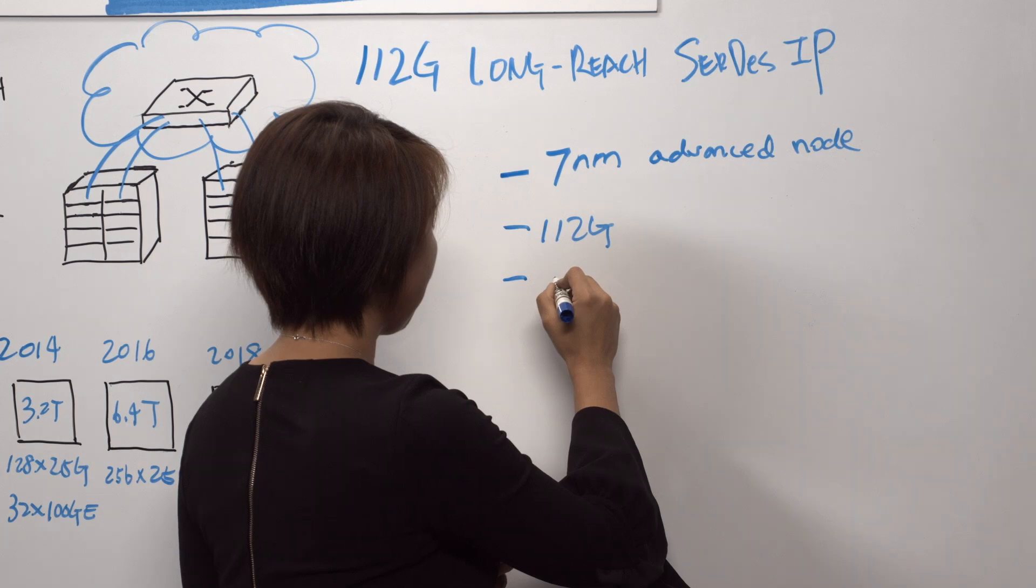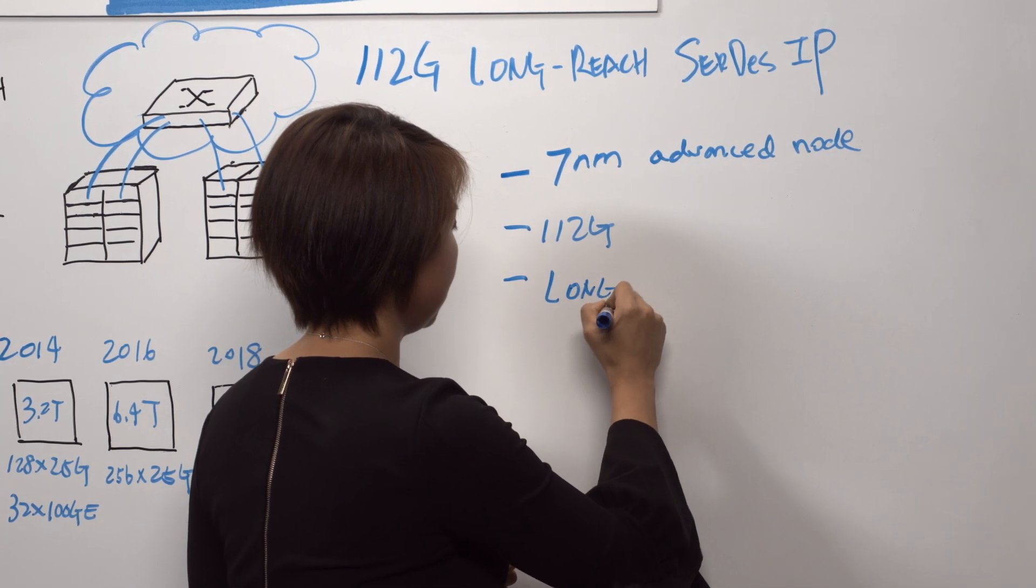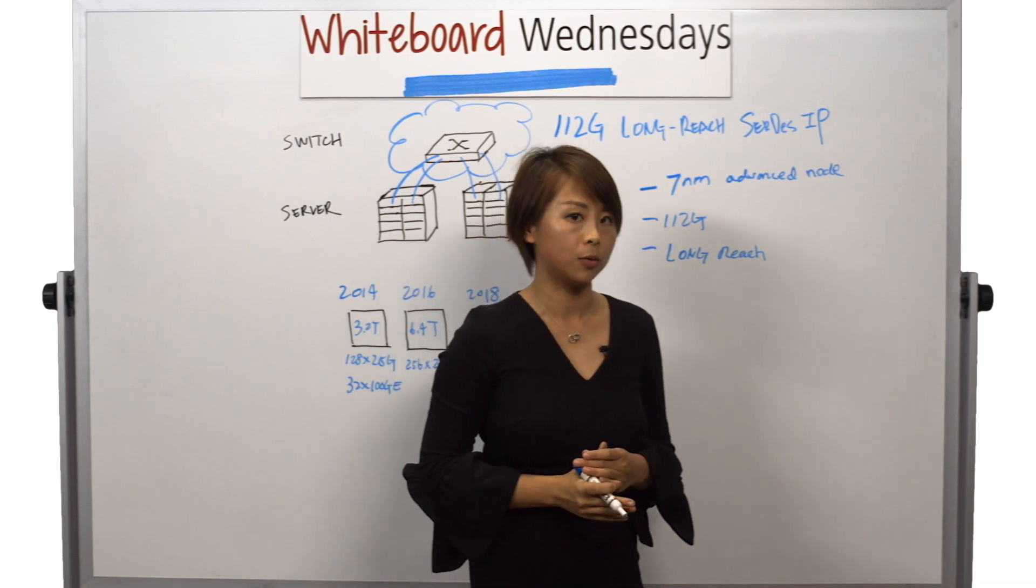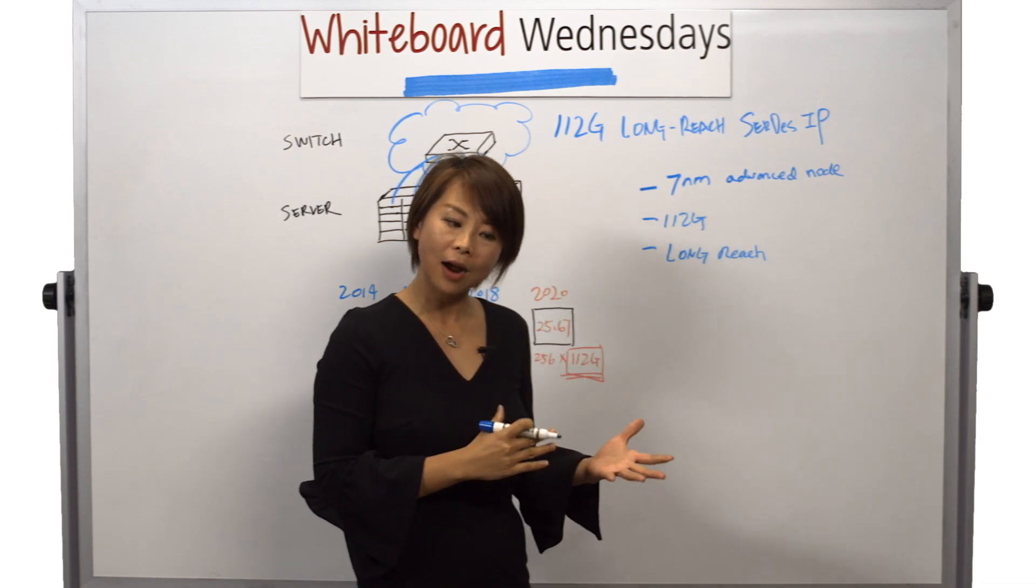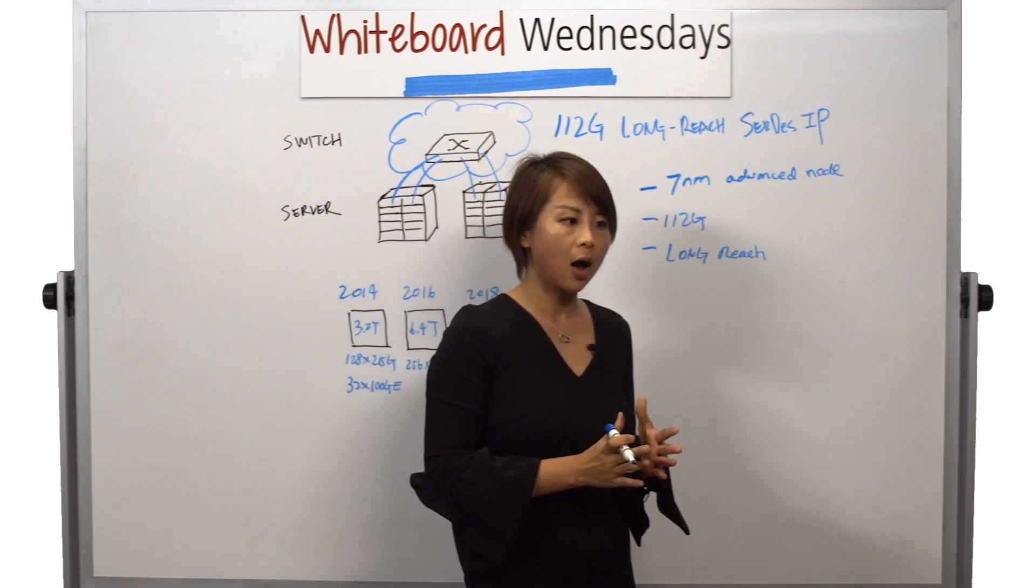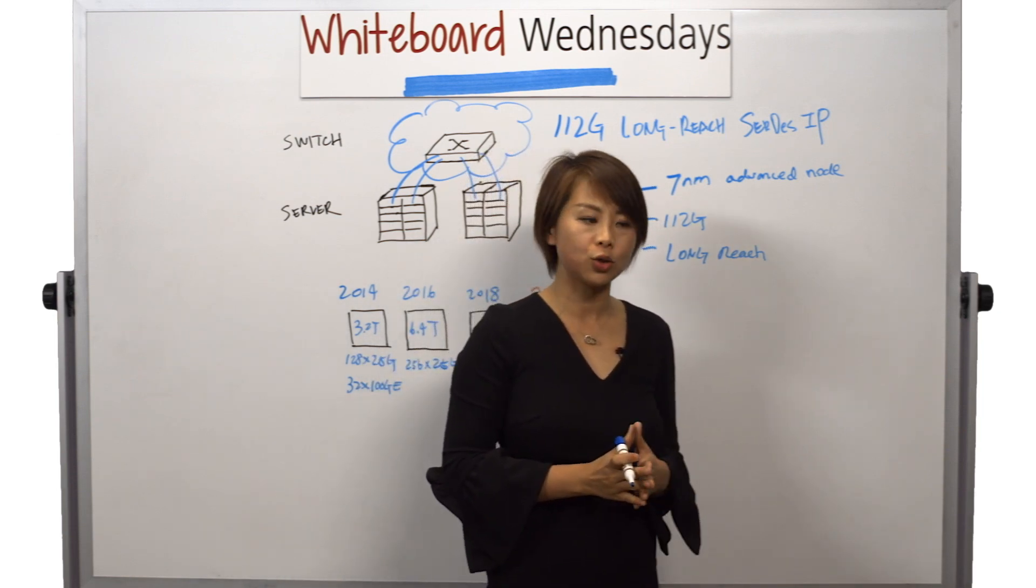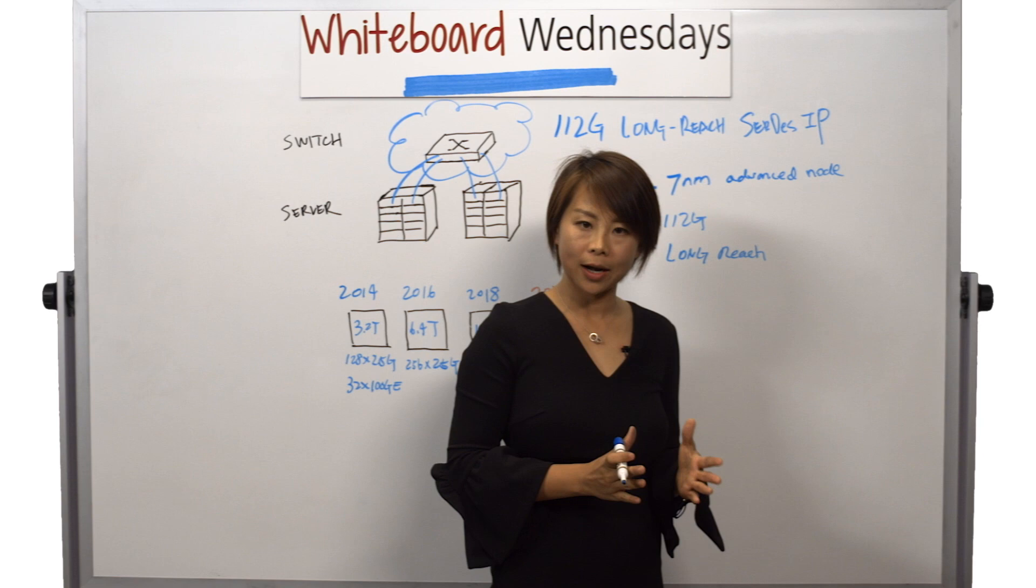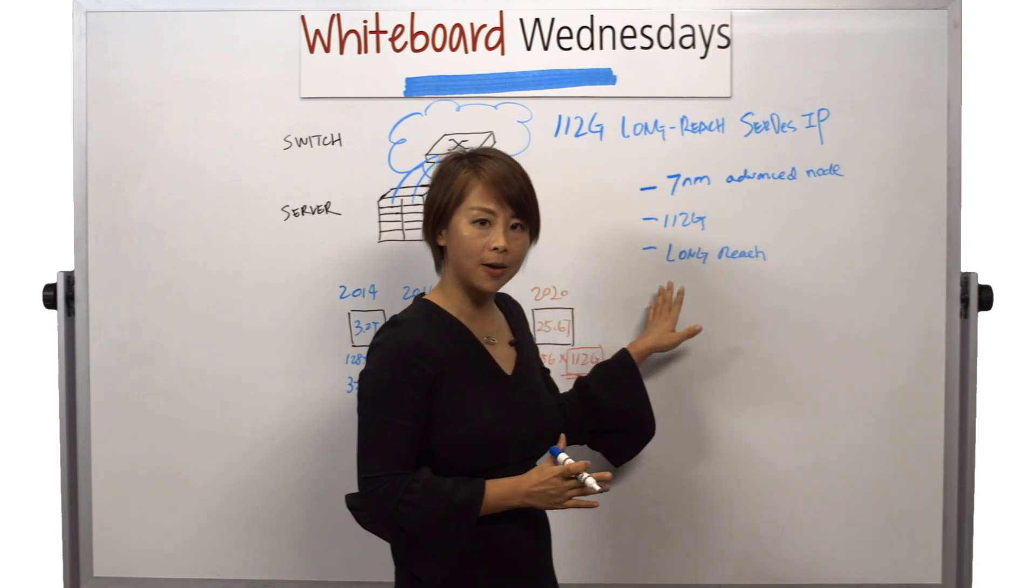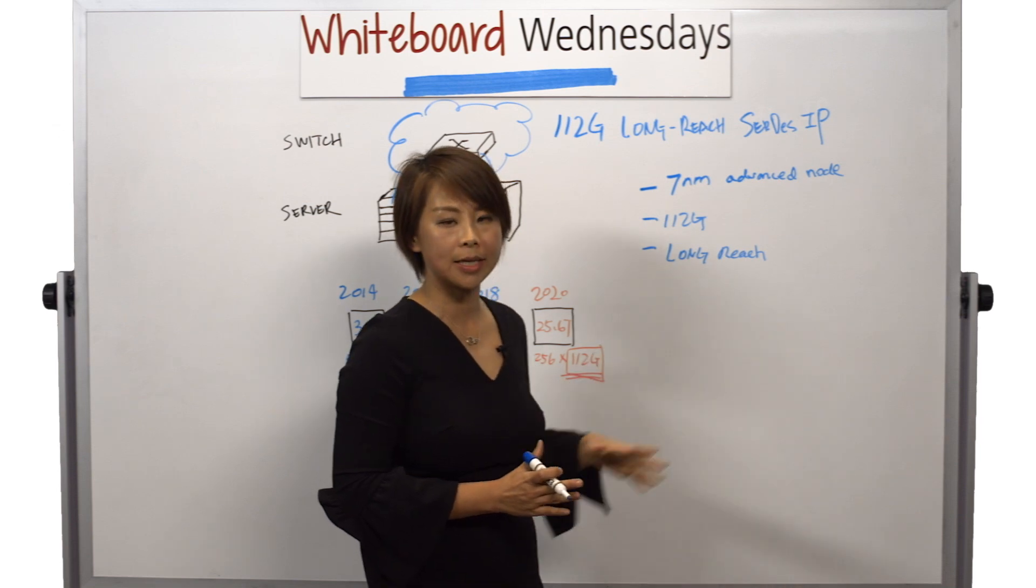Thirdly, not all 112G is born equal. There are other applications that would require shorter links. So there are 112G XSR, 112G VSR, and 112G MR standards. But what we have here is a long-range LR SerDes.